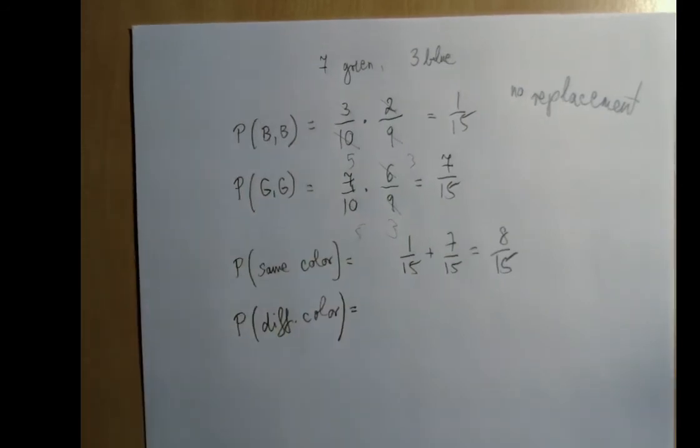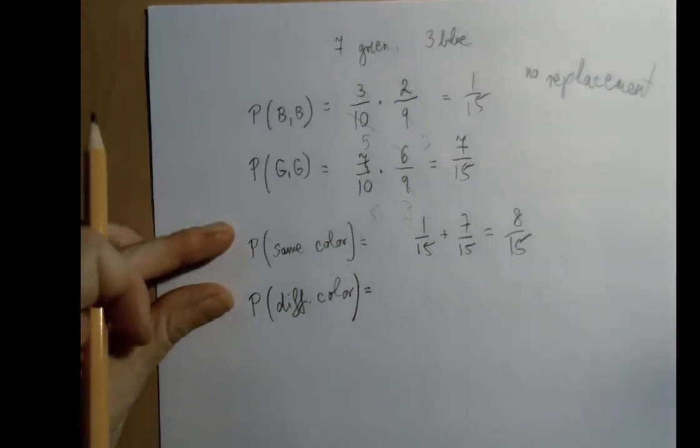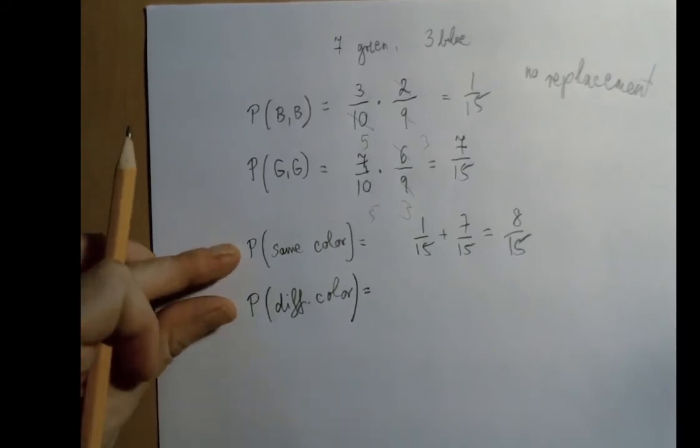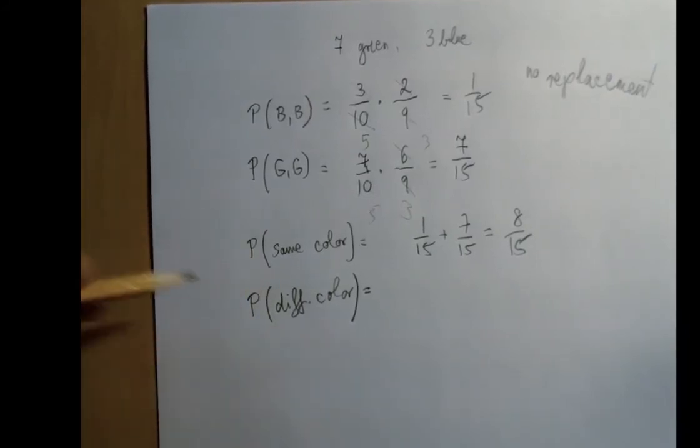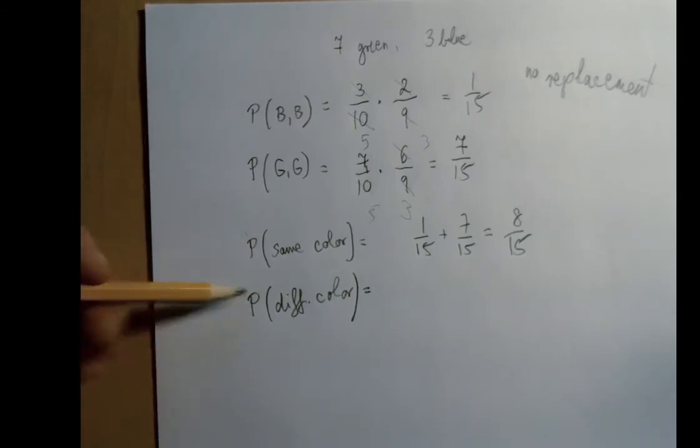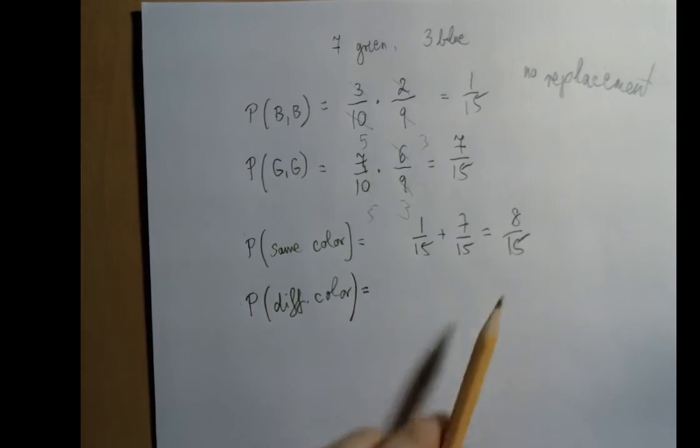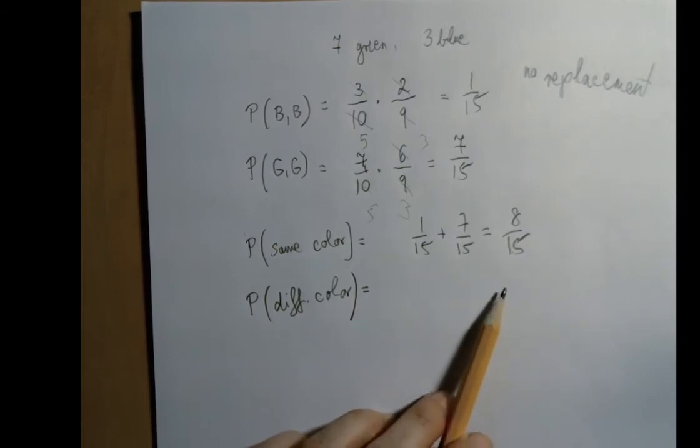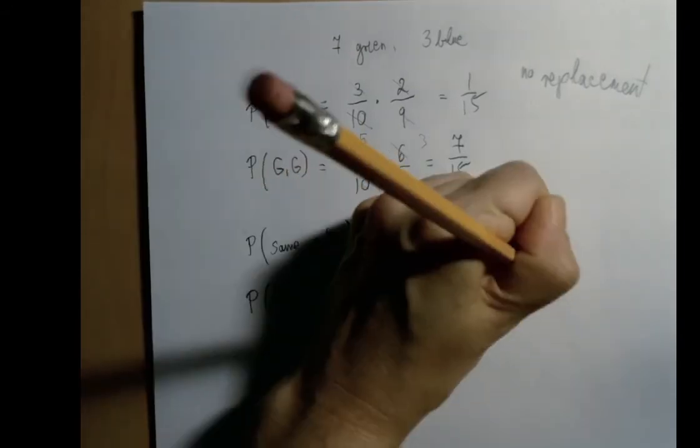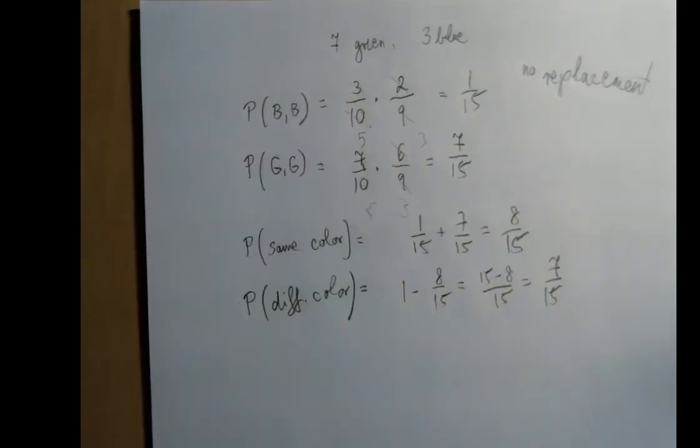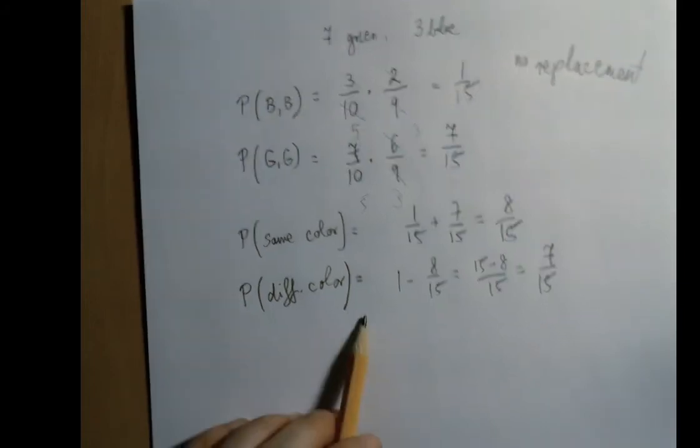And now, for the probability of different colors, these two cover every possibility without overlap, which means that the probabilities of these two should add up to 1, because this covers 8 cases out of the 15, this has to cover the other 7 cases out of the 15. So it's 1 minus 8 over 15, which is, 1 is 15 over 15, so that's 7 out of 15.